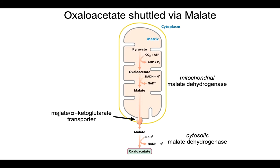We need this oxaloacetate to leave the mitochondrial matrix and enter the cytosol. The problem is that there is no transporter for oxaloacetate that allows it through the inner and outer membranes of the mitochondria. But there is a malate alpha-ketoglutarate transporter. The relationship between oxaloacetate and malate is simply that one is the reduced version and one is the oxidized version of the molecule. So we use malate dehydrogenase to reduce oxaloacetate to malate, and now malate can slip through that transporter.